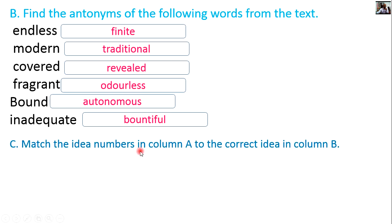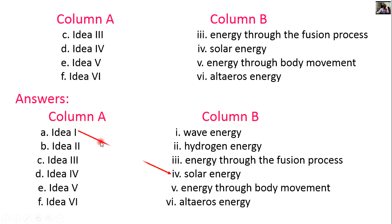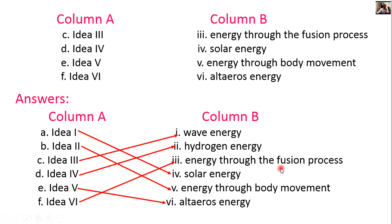Similarly, match the area numbers in column A to the correct area in column B. Area first is solar energy. Area second is energy through body movement. Area third is wave energy. Area fourth is hydrogen energy. Area fifth is altarose energy. Area sixth is energy through the fusion process.